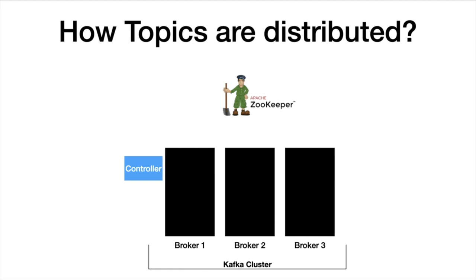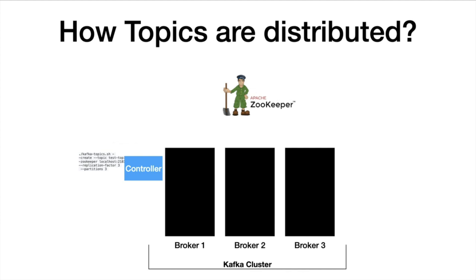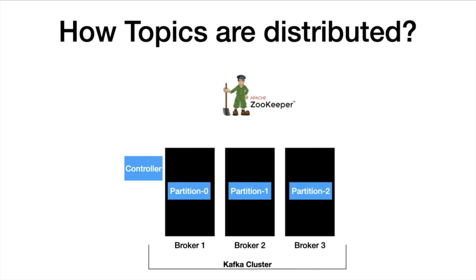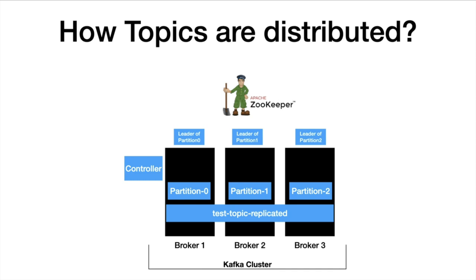Now we have the environment completely set. When the create topic command is issued to the Zookeeper, the Zookeeper takes care of redirecting this request to the controller. The role of this controller is to distribute the ownership of the partitions to the available brokers. So in this example, we have partition 0 sitting in broker 1, partition 1 sitting in broker 2, and partition 2 sitting in broker 3. In distributed systems, this concept of distributing partitions to the brokers is called leader assignment. So in a nutshell, the test topic is distributed across the Kafka cluster.